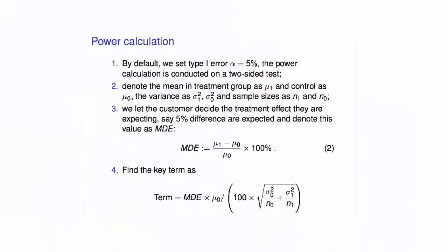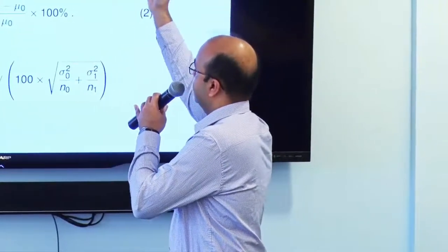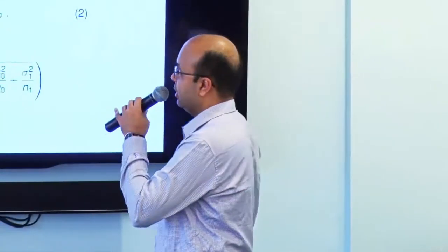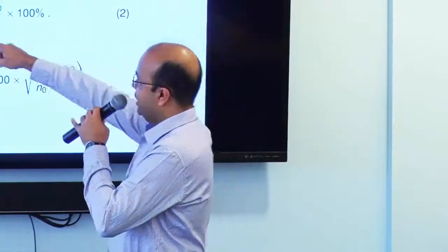The power calculation — that's the type two error. By default we set type one error to roughly five percent. It's one of those tribal knowledge things that evolved from early tech companies like Amazon and Microsoft, and then everyone follows it. But there is no reason to set it to five percent — it varies from business problem to business problem; you can set it to one percent or ten percent. We denote the mean of the treatment group and the control. MDE is the minimum detectable effect — the business is saying I will be delighted to see a 20% lift, but I'm okay if I see 10%; I'm still going to roll out that feature. That's the minimum detectable effect.